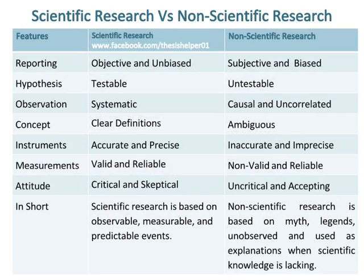Reporting in scientific research is objective and unbiased, whereas reporting in non-scientific research is subjective and biased. Hypothesis in scientific research is testable, whereas hypothesis in non-scientific research is untestable. Observation in scientific research is systematic, whereas observation in non-scientific research is casual and uncorrelated.